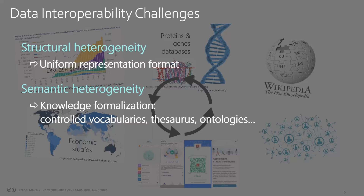To overcome structural heterogeneity you need to come up with a uniform representation of the data that applies everywhere. The second type of heterogeneity is about semantics — how can you ensure that two elements from two separate data sources actually mean the same thing, or that one is a generalization or specialization of another? Expressing this requires some sort of knowledge formalization, and there is a long history of work addressing these challenges in computer science.